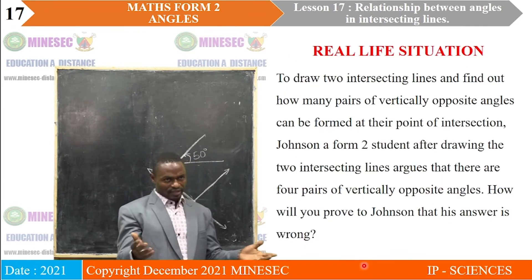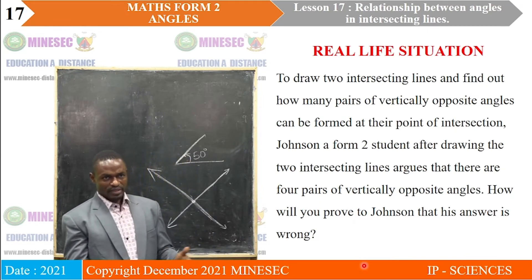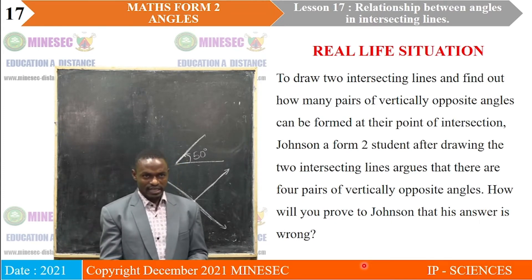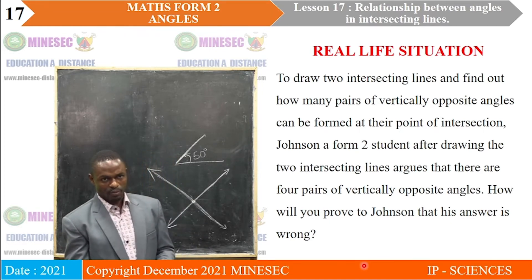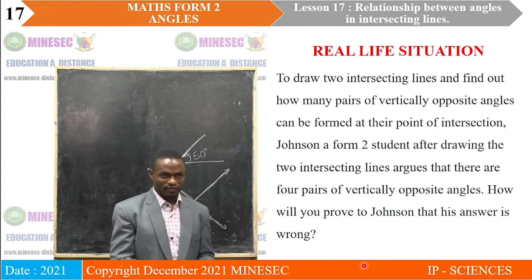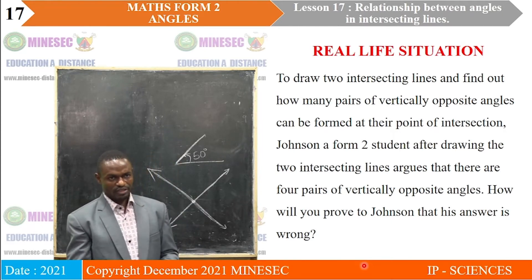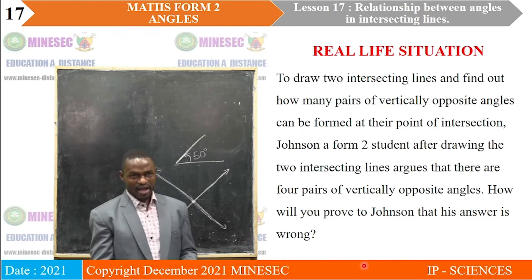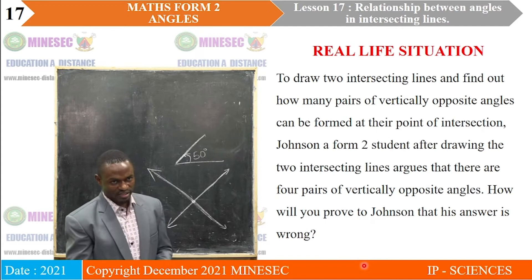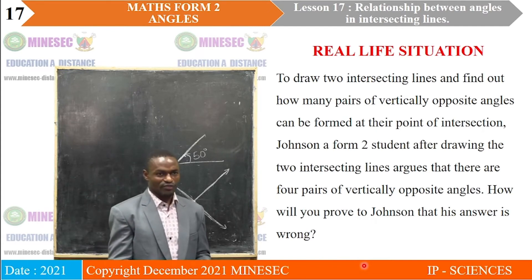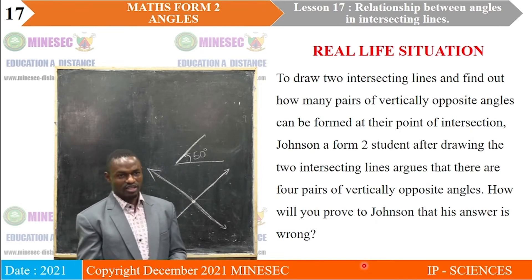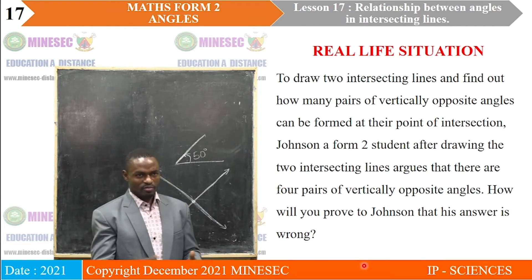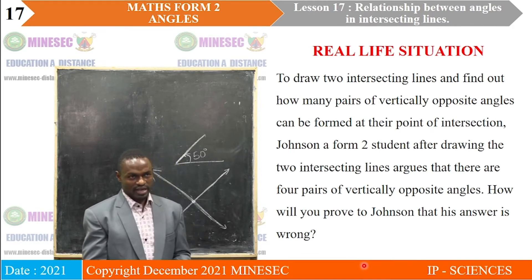Now we look at a real-life situation related to the lesson. Johnson was asked to draw two intersecting lines and find out how many pairs of vertically opposite angles can be formed at the point of intersection. Johnson, a Form 2 student, argues that there are four pairs of vertically opposite angles. How will you prove to Johnson that his answer is wrong? We will come back to this at the end of the lesson.